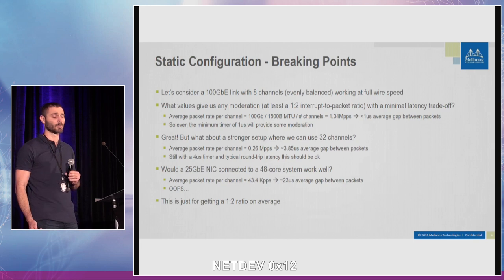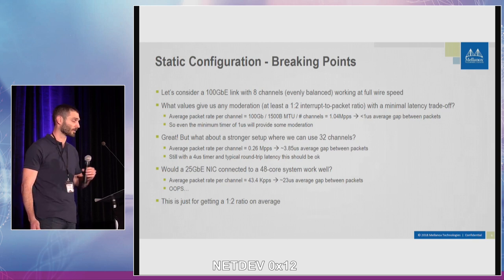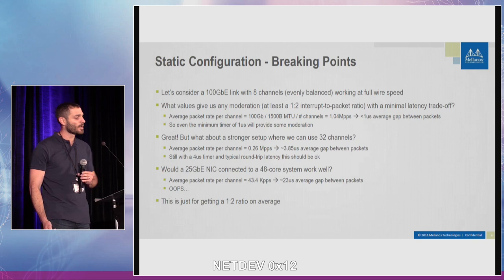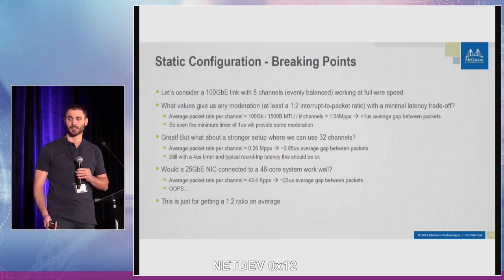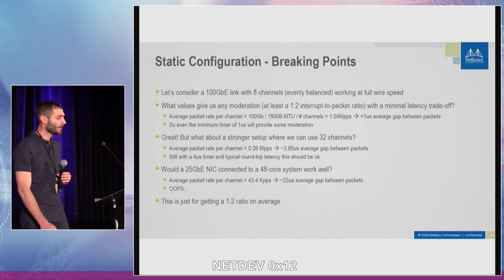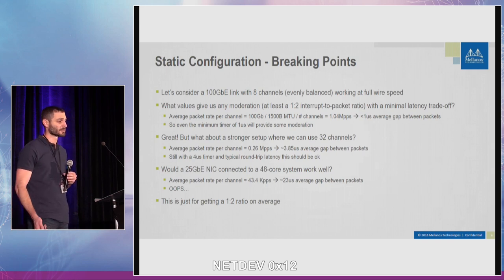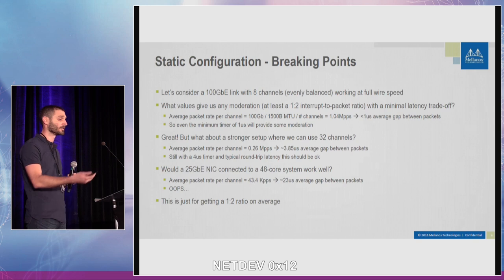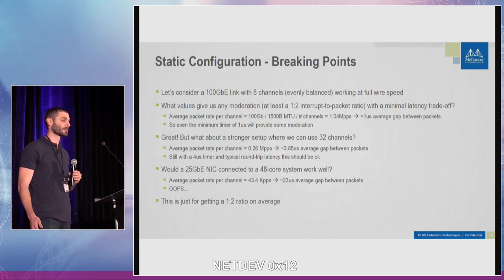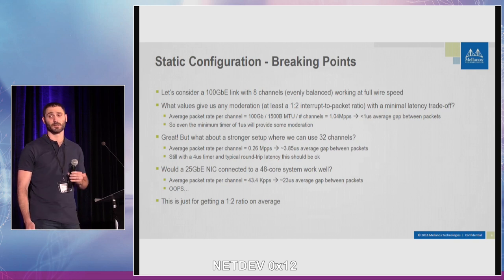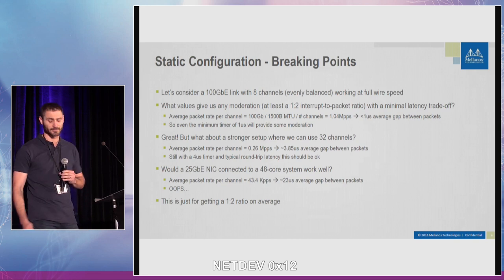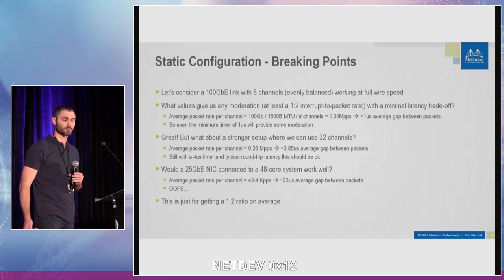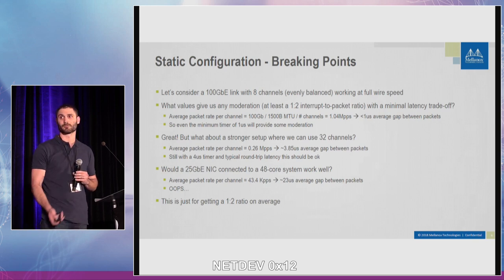But we are not all working at 100 gig. At 25 gig with 48 cores where I want a channel per core, each queue does very little work and the average gap between packets starts to get longer — around 23 microseconds in this example. This is not good. We need a very long timer just to get a one-to-two ratio. So this is the problem: static configuration at some point won't work for us. We're looking for an out-of-box solution — we don't want to change the static configuration for each scenario.